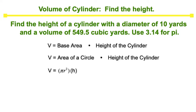Use 3.14 for pi. Let's quickly review the volume formula for a cylinder, which is the area of a circle times the height of the cylinder. So the area of a circle formula is pi r squared. The height of the cylinder is h.